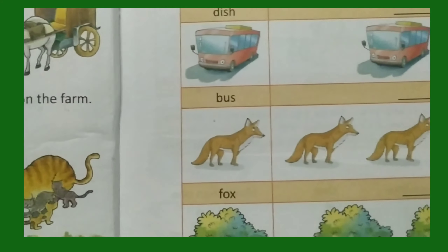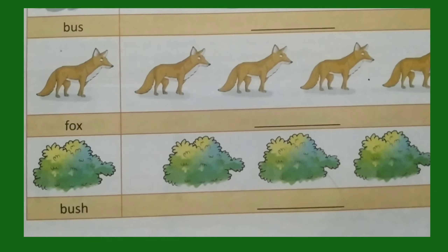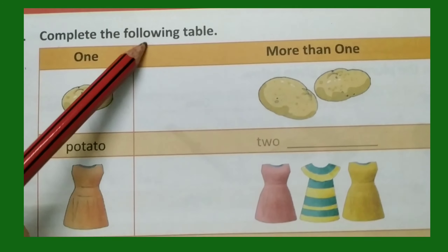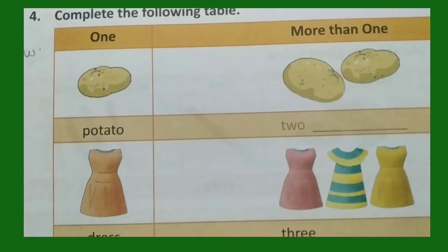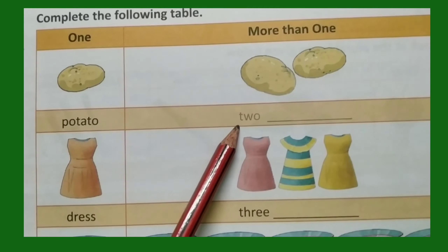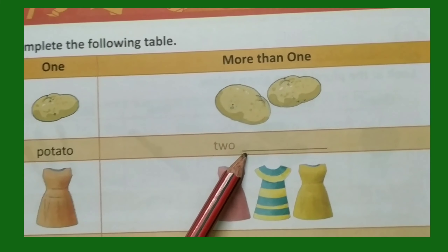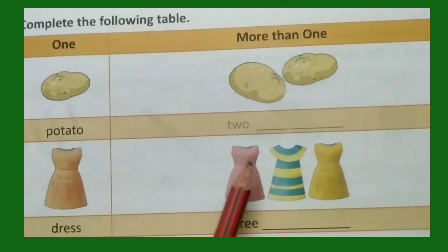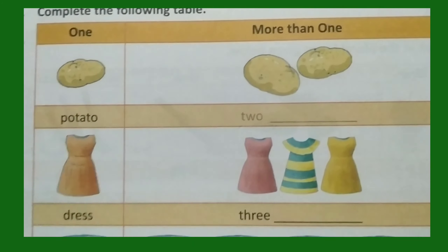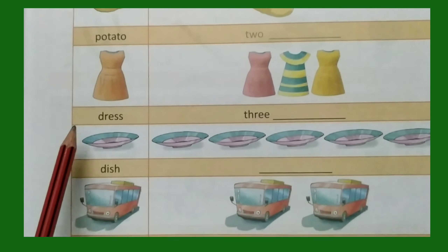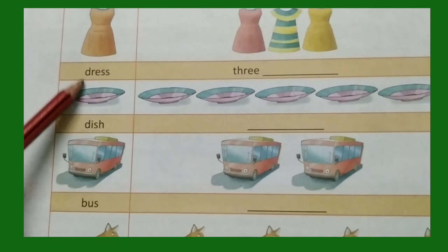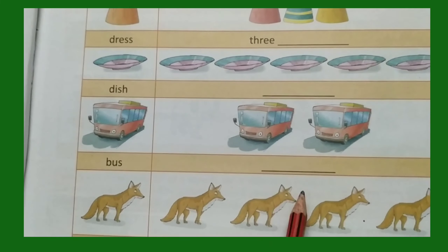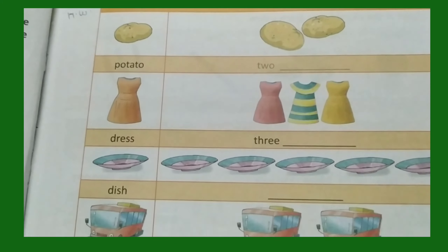Page 9, number 4: complete the following table — one and more than one. For potato, will you add es or ies, or will you add ves? Choose the correct plural form. For dress, similarly you will complete the plural names of things by adding ies, ves, or simply s.